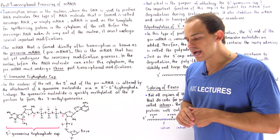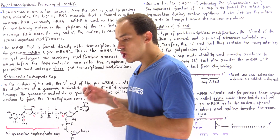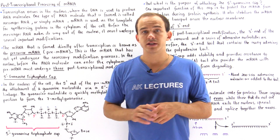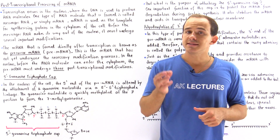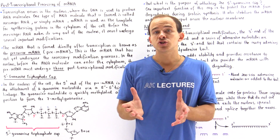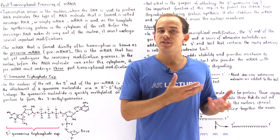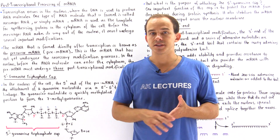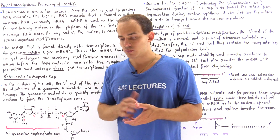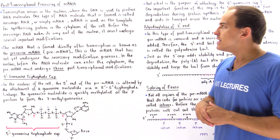One important type of RNA molecule is known as messenger RNA or mRNA, and it's the mRNA that actually serves as the template for protein synthesis that takes place in the ribosomes in the cytoplasm of our cell.